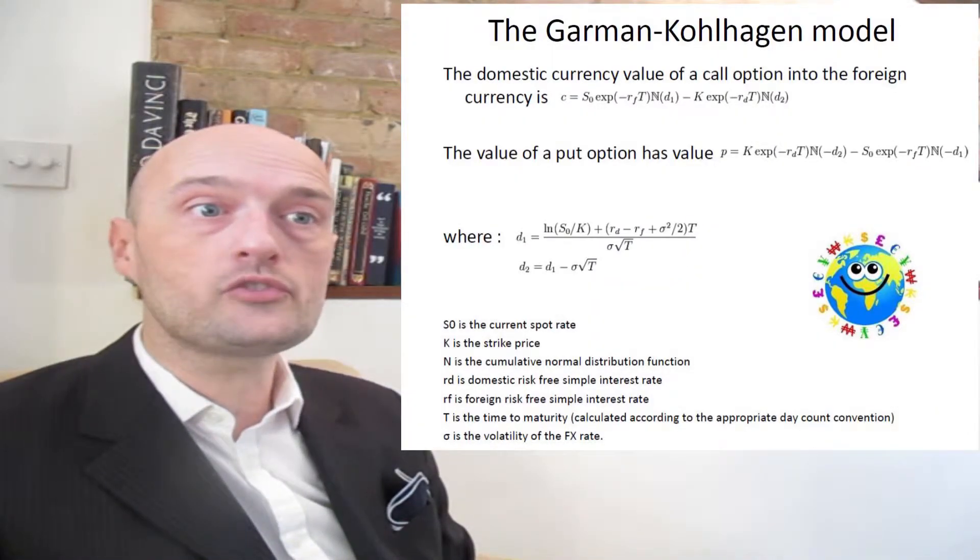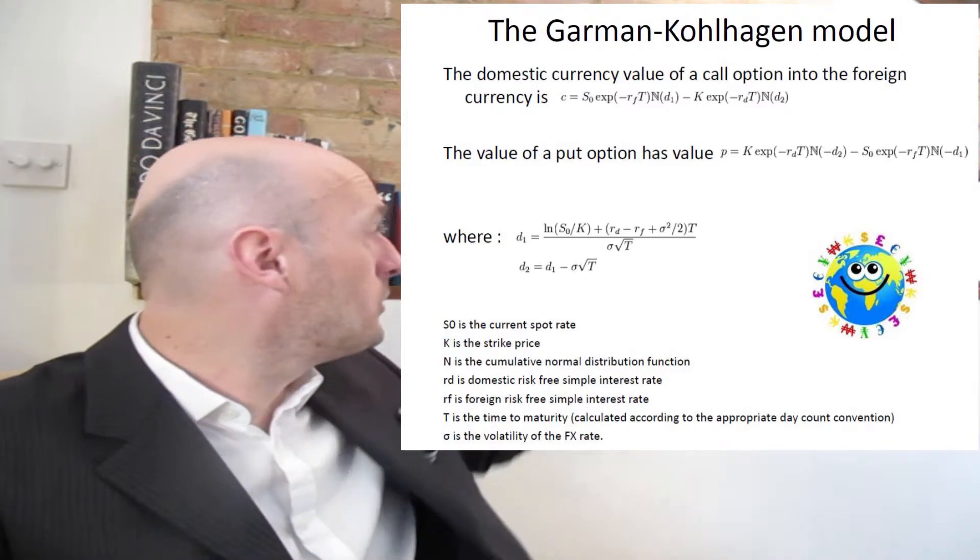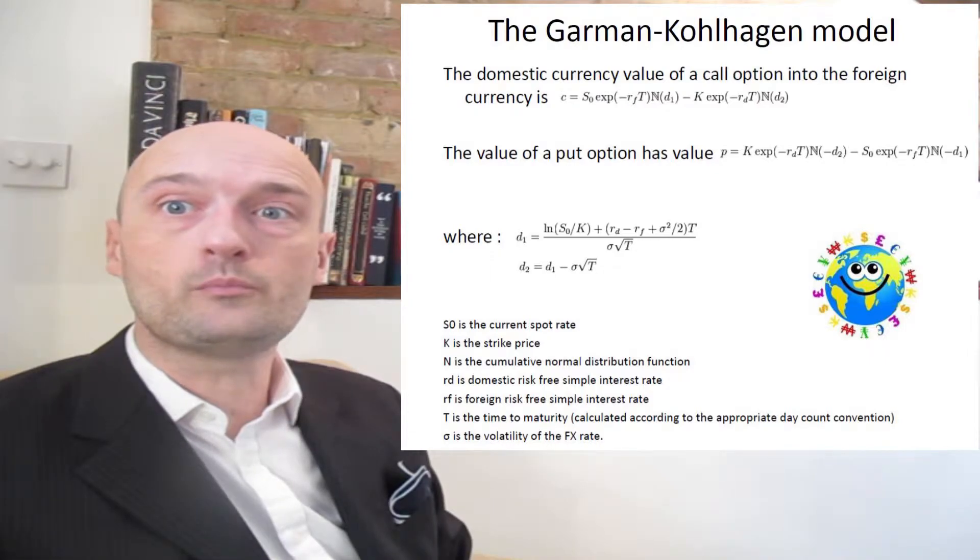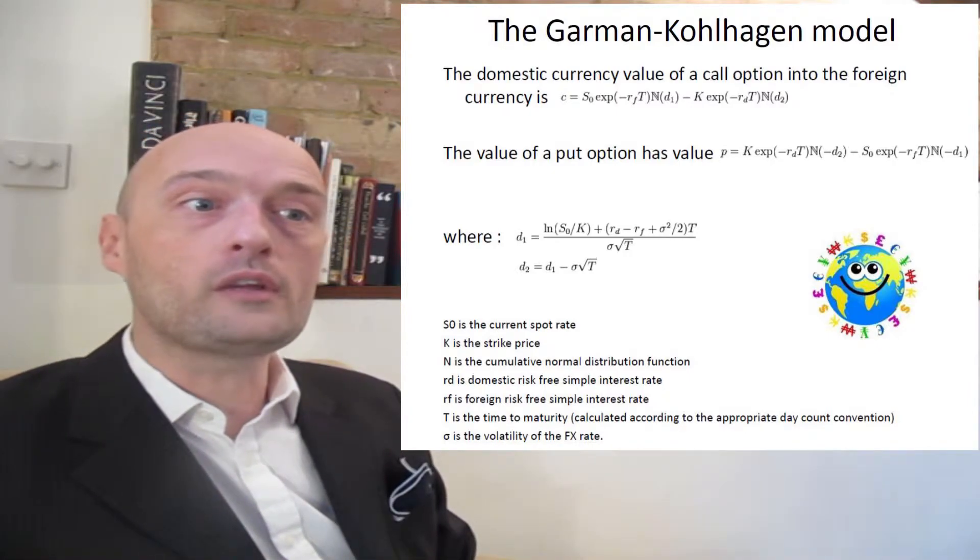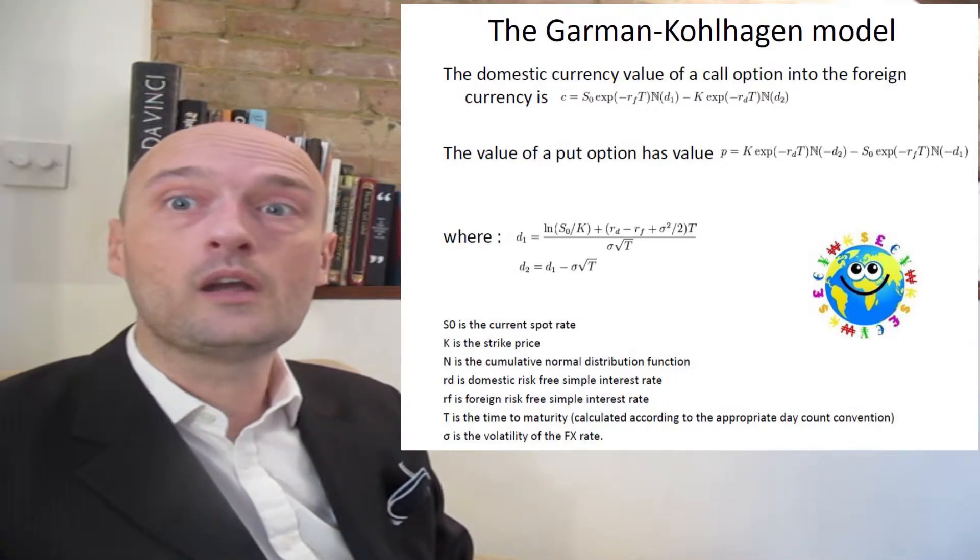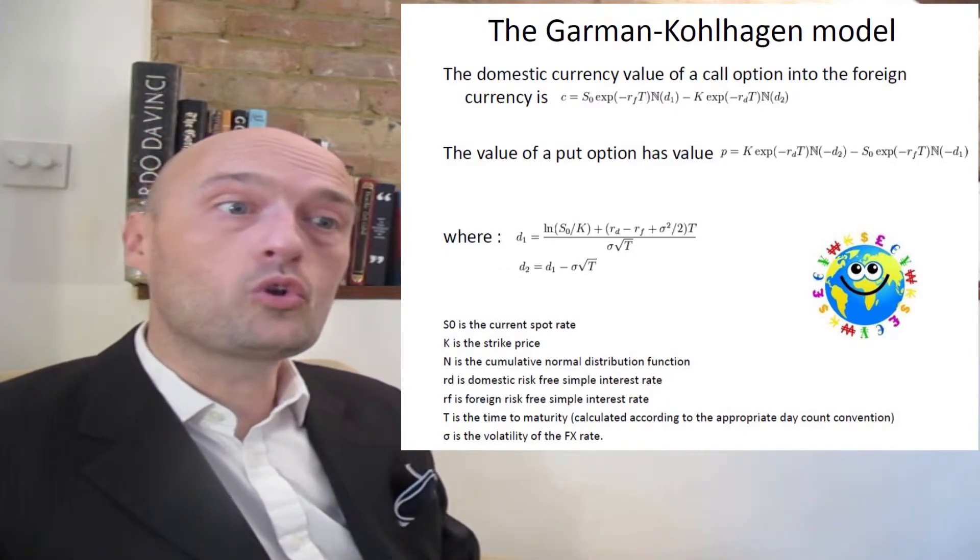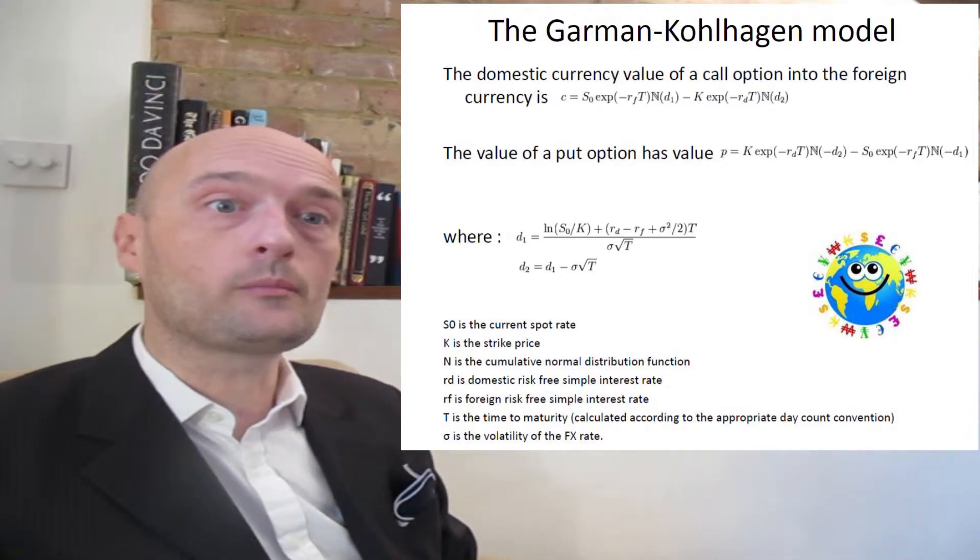The Black-Scholes model can once again be modified to price options on foreign exchange. The modified formula is called the Garman-Kohlhagen model. All of these formulas, by the way, are in my textbook, which is called Trading and Pricing Financial Derivatives, and there is a link to that in the description below. The Garman-Kohlhagen model was developed in 1983 and extended the Black-Scholes model to cope with the presence of two interest rates. It's a little bit like when we were pricing futures on foreign exchange—we just have to deal with the fact that there is more than one interest rate: the domestic and the foreign interest rate.